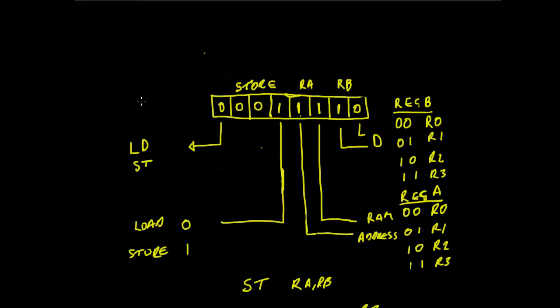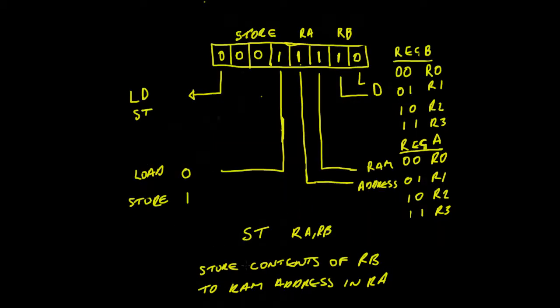In this video we're going to go through the load and the store instructions, one at a time. We'll start off with the store. The store instruction is given by 0001. This fourth bit will determine if it's load or store - if it's a 1 it's a store, if it's a 0 it's a load.